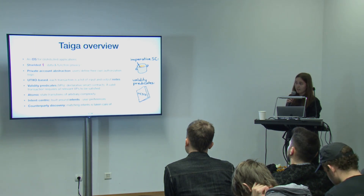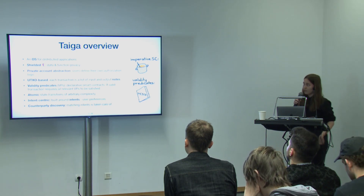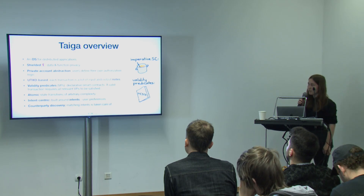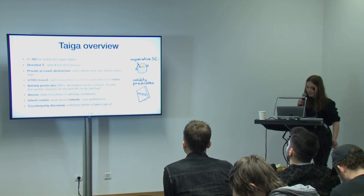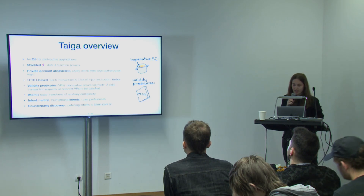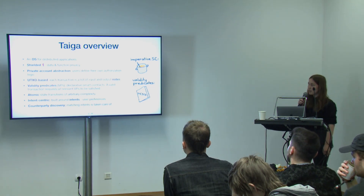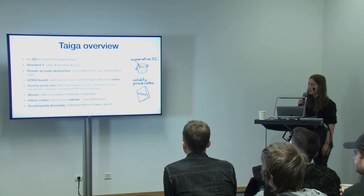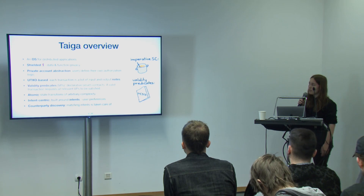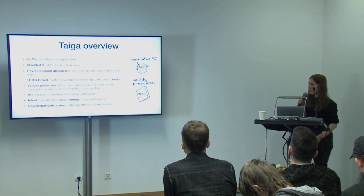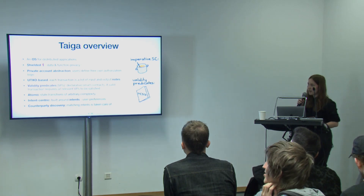Tyga is shielded, meaning it provides both data and function privacy. Private account abstraction means users define their own rules. Like many other privacy-preserving projects, it's UTXO-based, so every transaction on Tyga is a list of input and output notes. Tyga also uses a notion of validity predicates, which are basically declarative smart contracts. In well-known smart contracts, you write down what to do and it just executes. But in validity predicates, you describe the final state transition or the properties it should have, and Tyga makes sure they're satisfied.